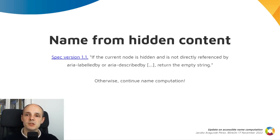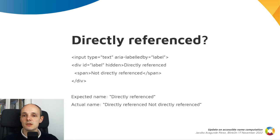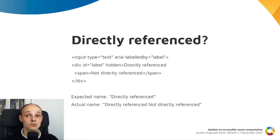The key point here is 'directly referenced,' because you might think that only direct children of that label would be used. For example, here we have a hidden div which is directly referenced by aria-labelledby and it has children. What should we do with those children?